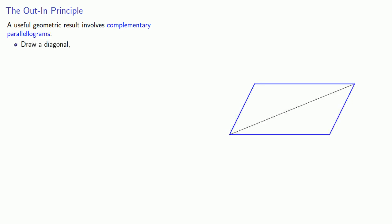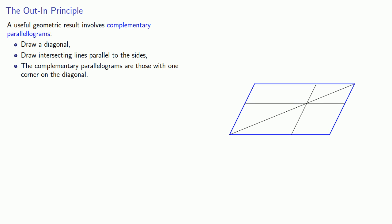The Chinese solved a number of very complicated geometric problems using what's called the Out-In Principle. This emerges from a useful geometric result that involves complementary parallelograms. The basic idea is this: if we take a parallelogram and draw the diagonal, then draw intersecting lines parallel to the sides, we end up with what are known as complementary parallelograms. You can think about these as parallelograms where one vertex is on the diagonal.